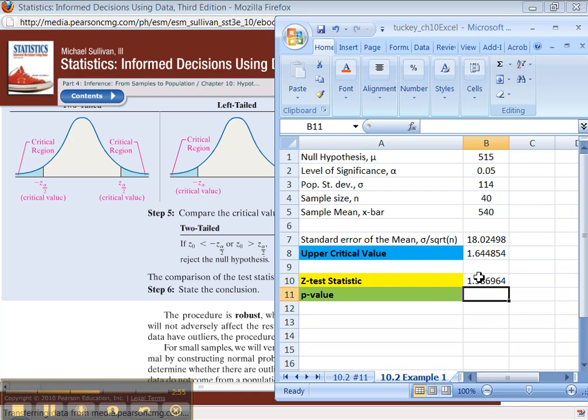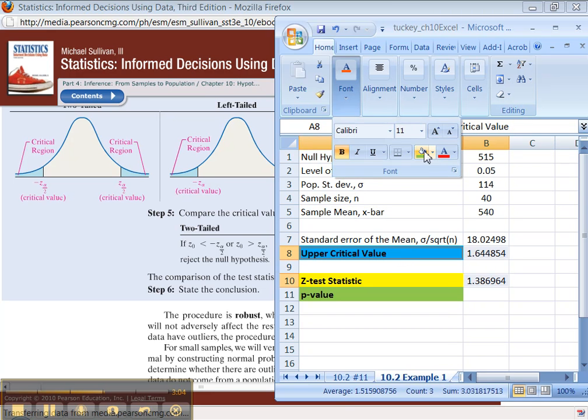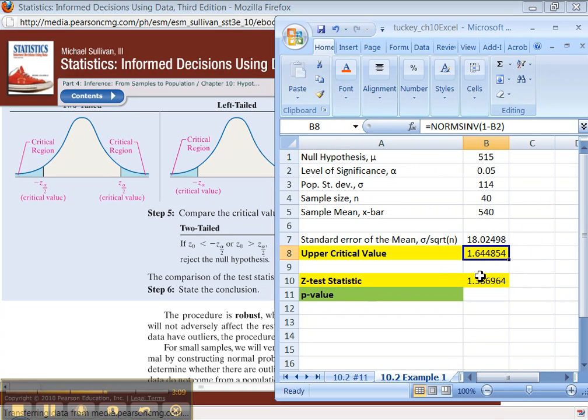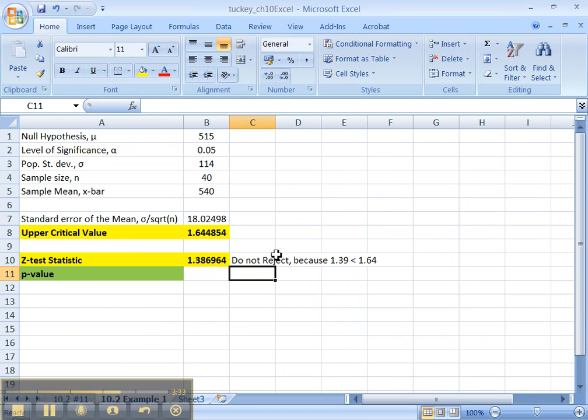So our test statistic is 1.39. Alright. Now just comparing these two, because that's what you do for the classical method. The classical method compares critical value with test statistic. So if this number right here, 1.38, was bigger than 1.65, 1.64, excuse me, we would reject. So we do not reject, because 1.39 is less than 1.64.